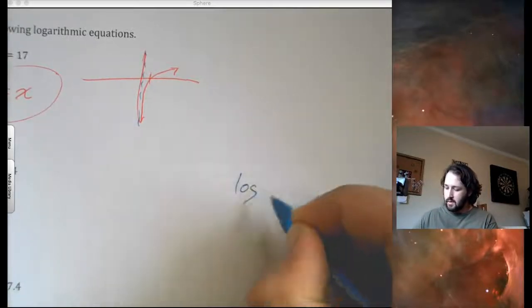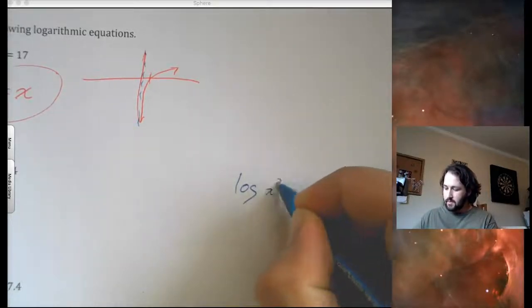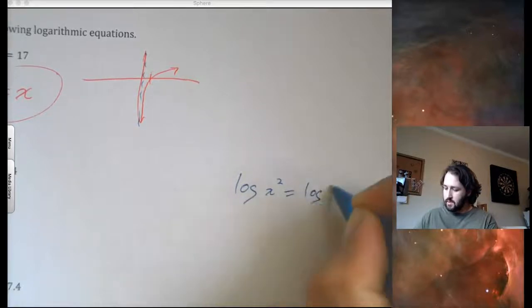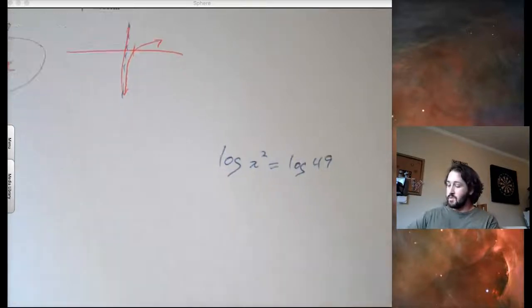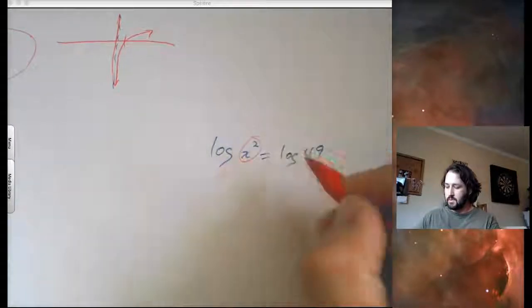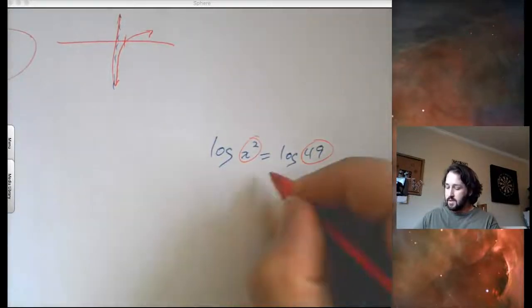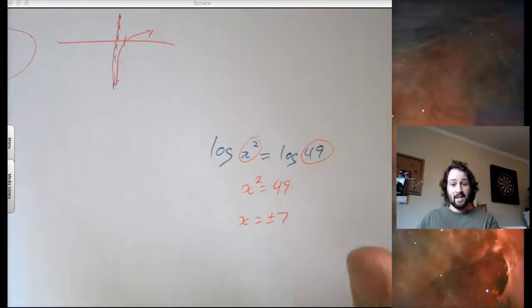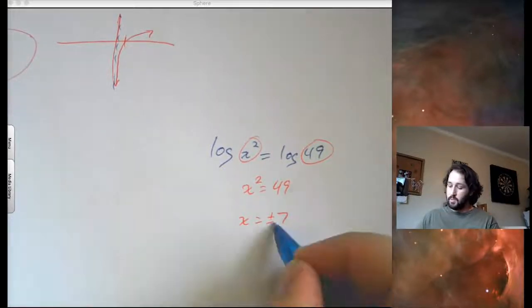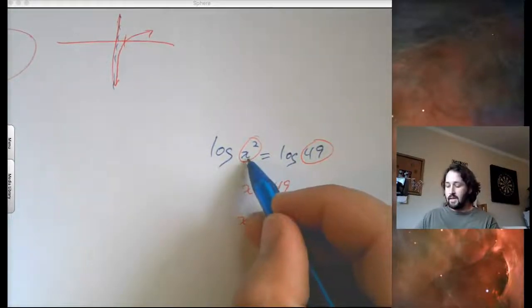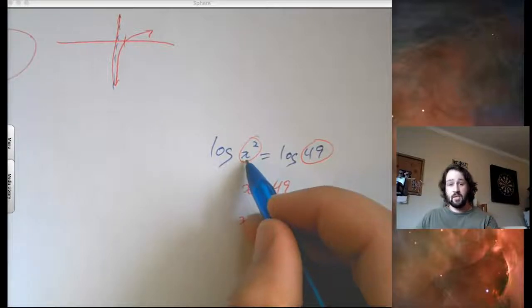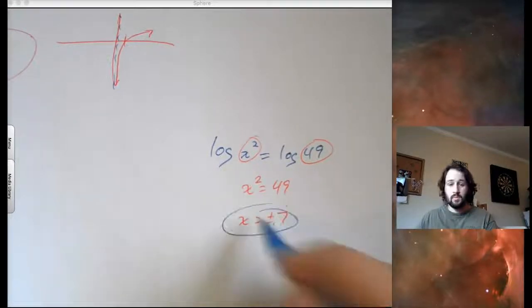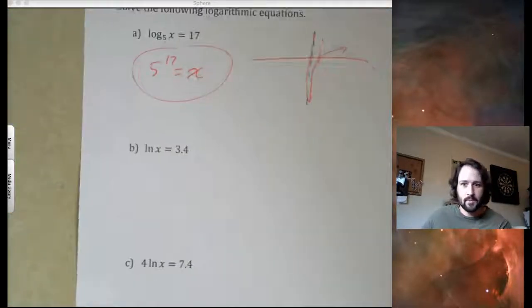Like, if we had log of x squared equals log of 49, the way that we would solve this one, notice I have log of something equals log of something else. So, I can say x squared equals 49. So, when I take the square root, that'll be plus or minus 7. That negative is a solution, because when I put it back into my original, that negative 7 squared will create positive 49, which is log of a positive number. So, both of those will be solutions in that. All right. That was just a freebie for you guys. That was an extra problem.